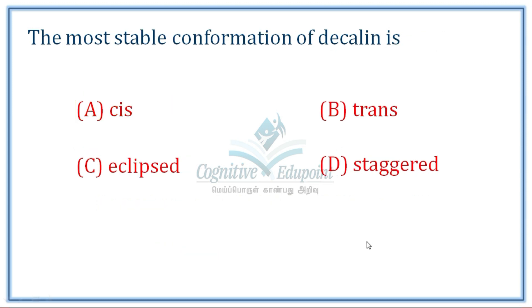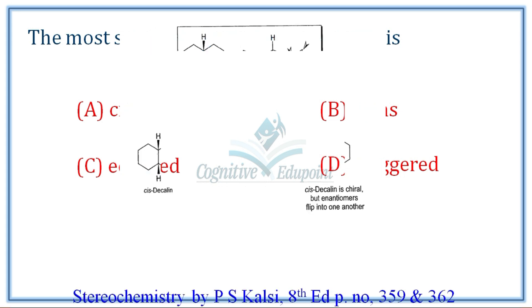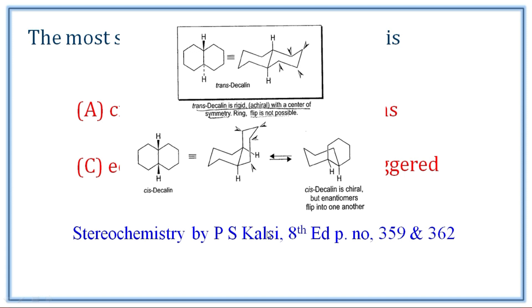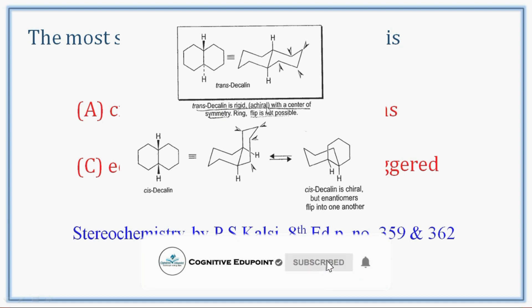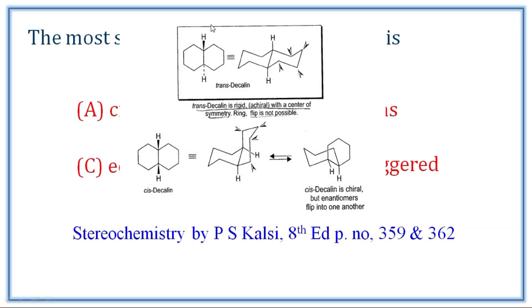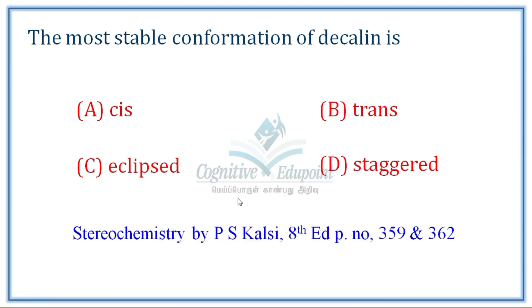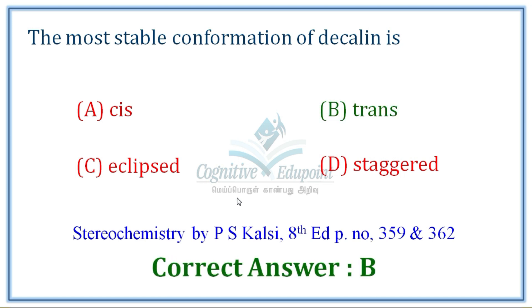Next question: the most stable conformation of decalin. The most stable conformation is the trans isomer. Correct answer is B.